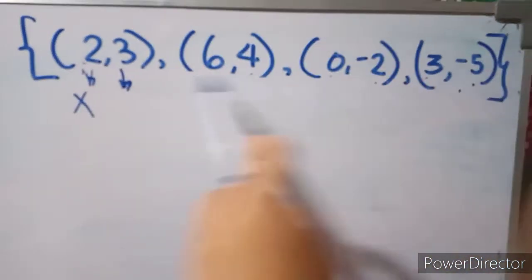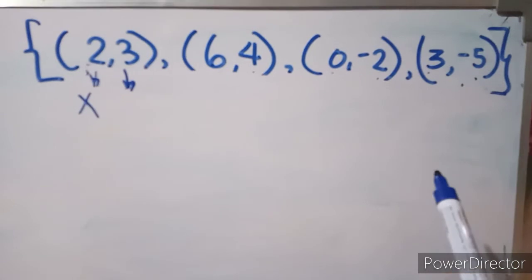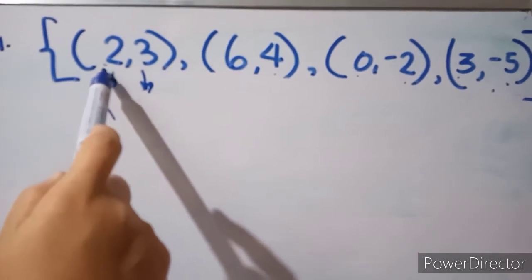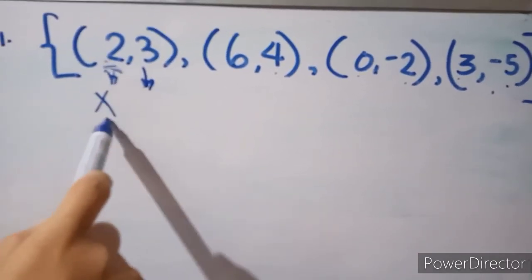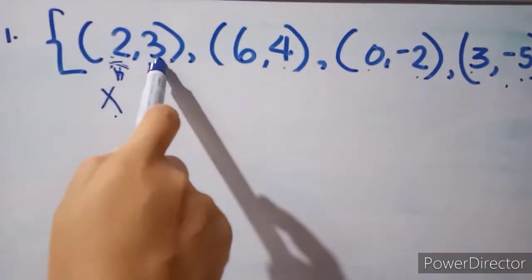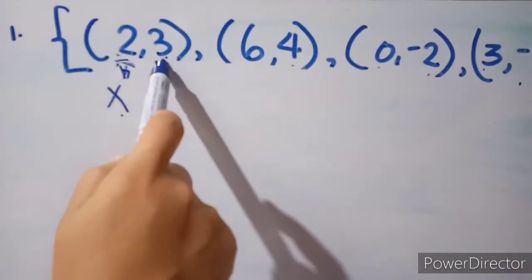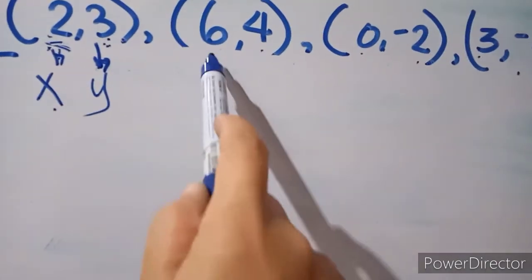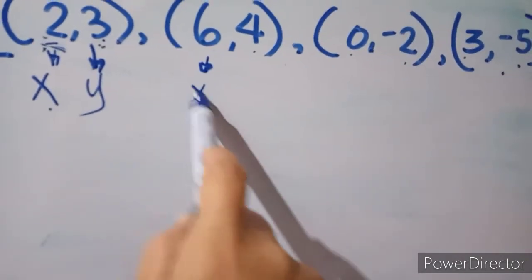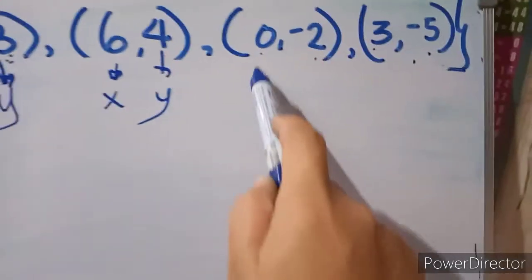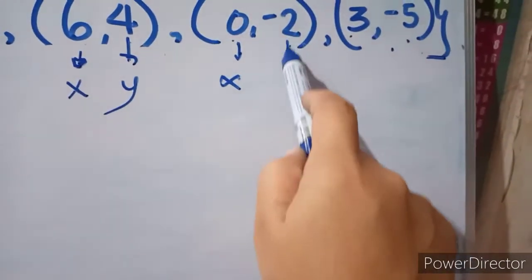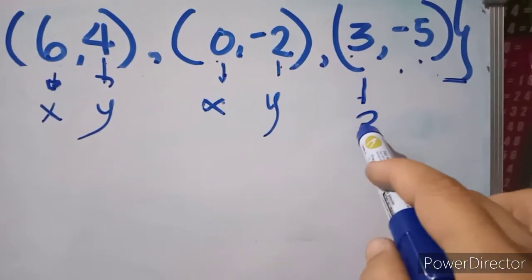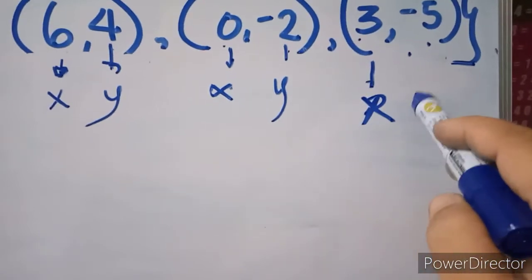So we have 4 ordered pairs, and we are going to identify if this set of ordered pairs is a function or not a function. Always remember that the first element of an ordered pair is what we call the x value, and the second element or second value is our y. So 6 is our x and 4 is our y, 0 is our x value and 2 is our y value, and 3 is the x value and 5 is our y.